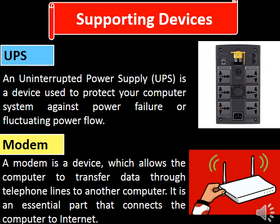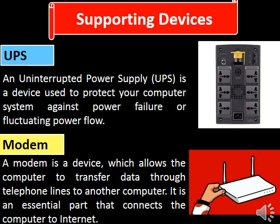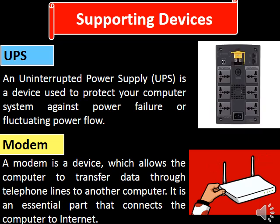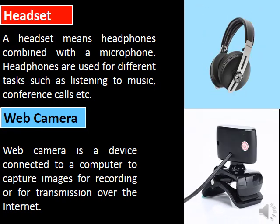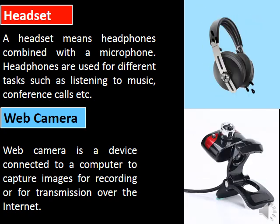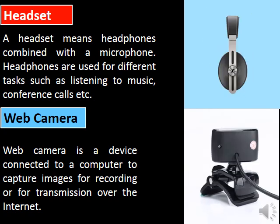Supporting devices. First, UPS — uninterrupted power supply. A UPS is a device used to protect your computer system against power failure or fluctuating power flow. Second, modem. A modem is a device which allows the computer to transfer data through telephone lines to other computers. It is an essential part that connects the computer to the internet. Third, headset. Headset means headphones combined with a microphone. Headphones are used for different tasks such as listening to music, conference calls, etc.